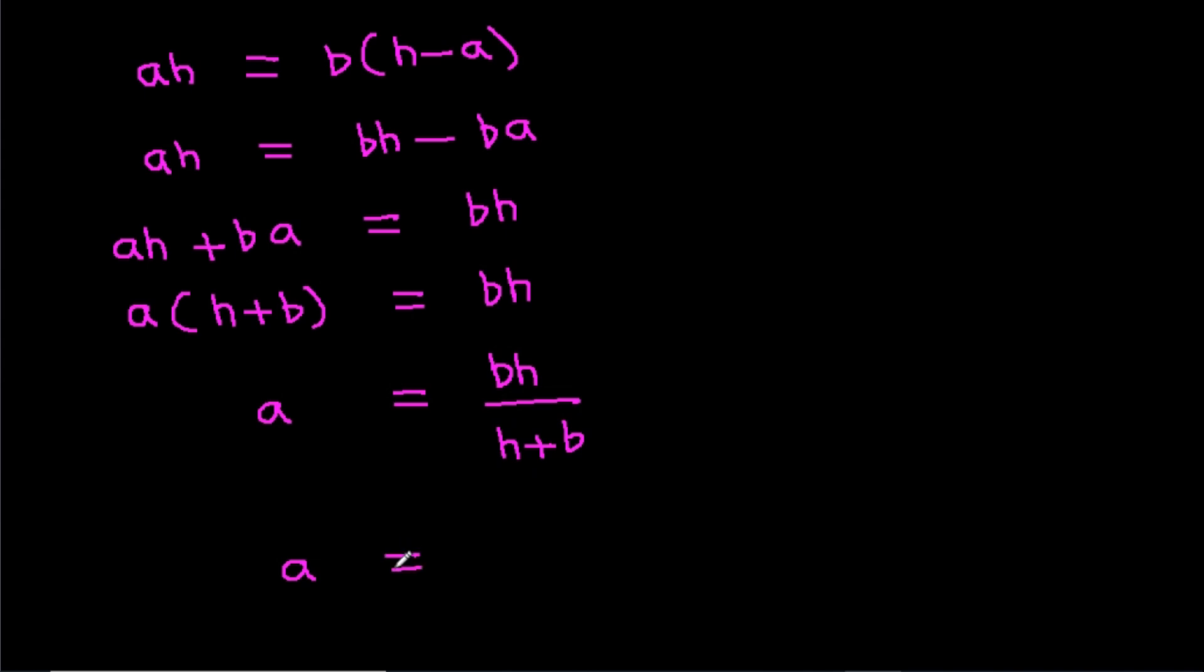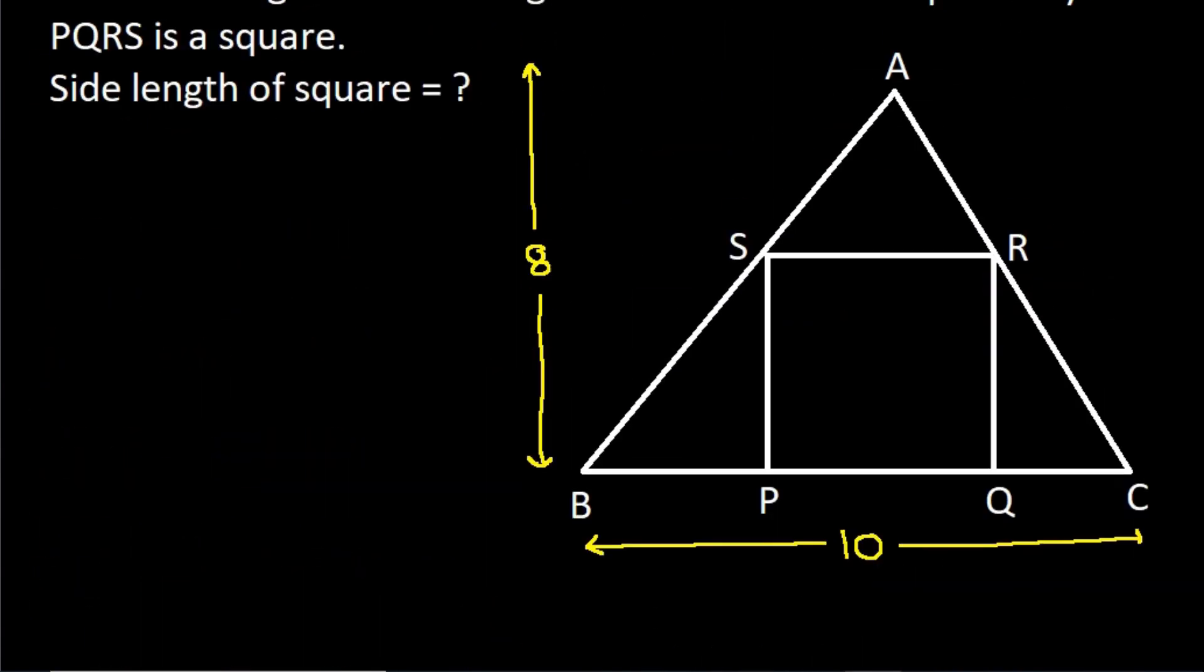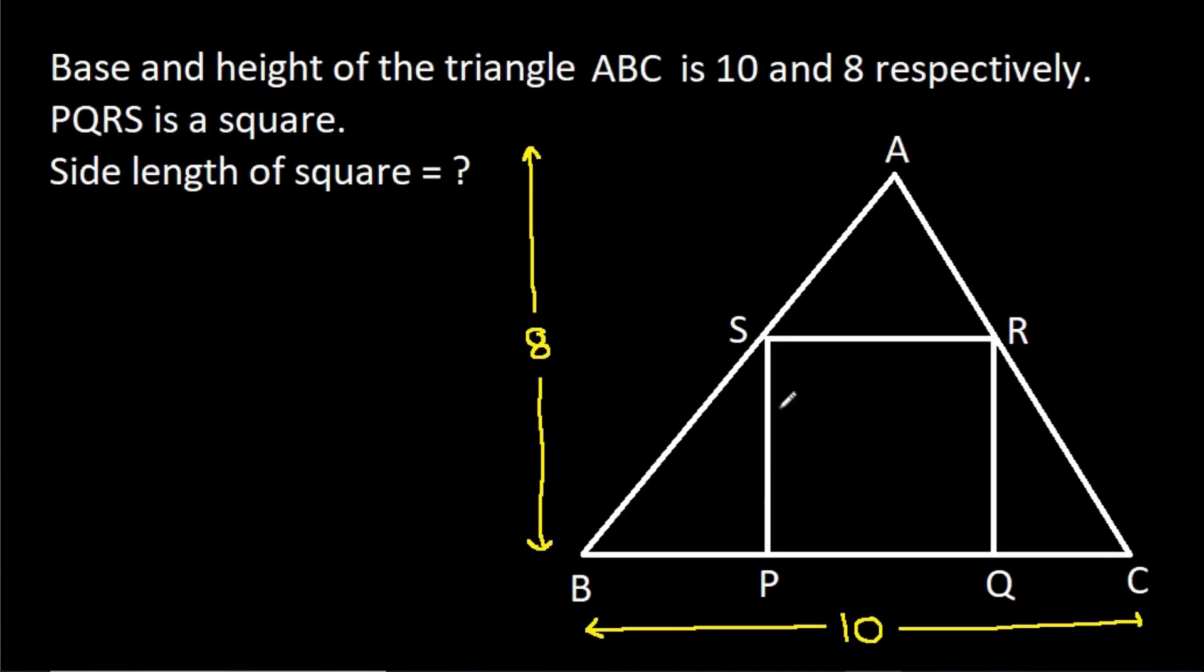So, a is equal to bH by H plus b. So, side length of a square is a. Then, a will be equal to bH by H plus b.